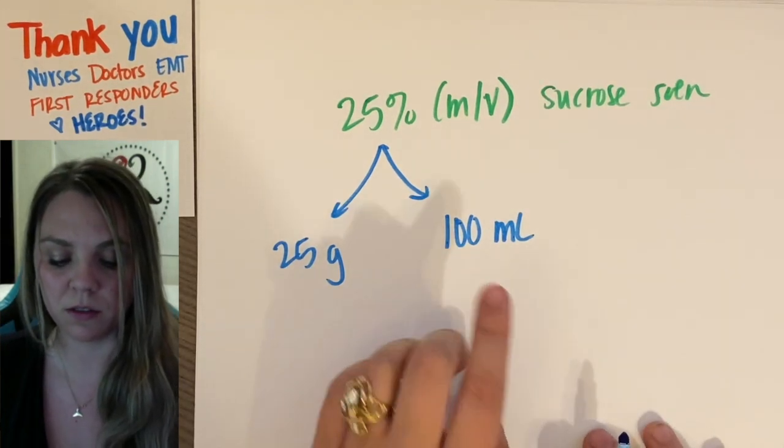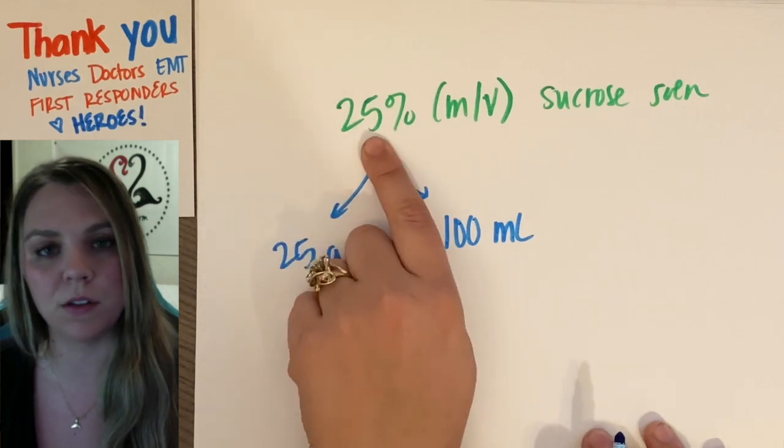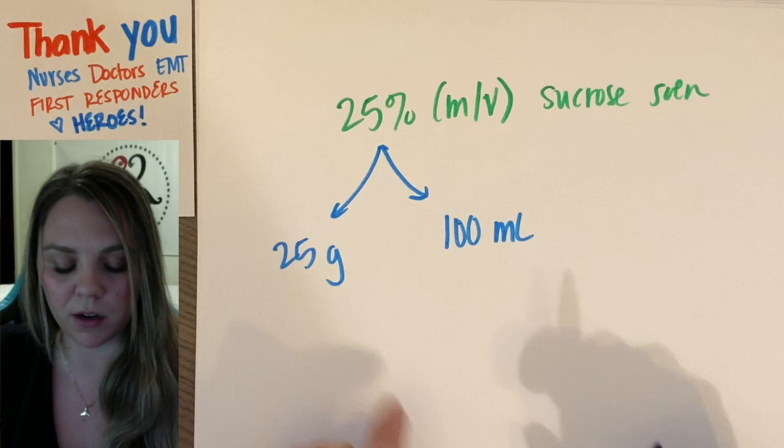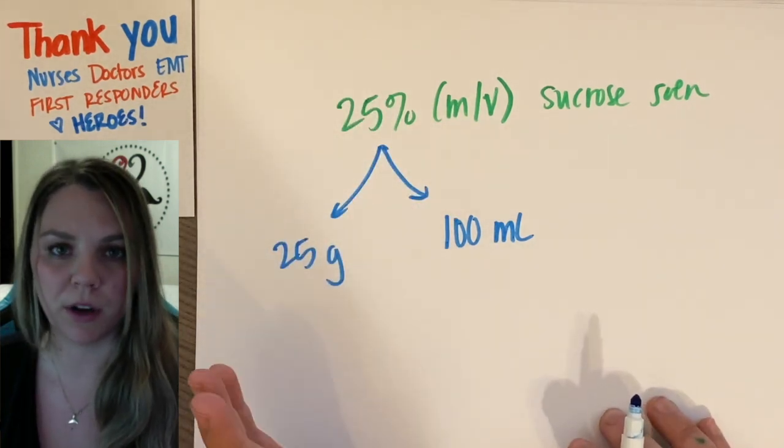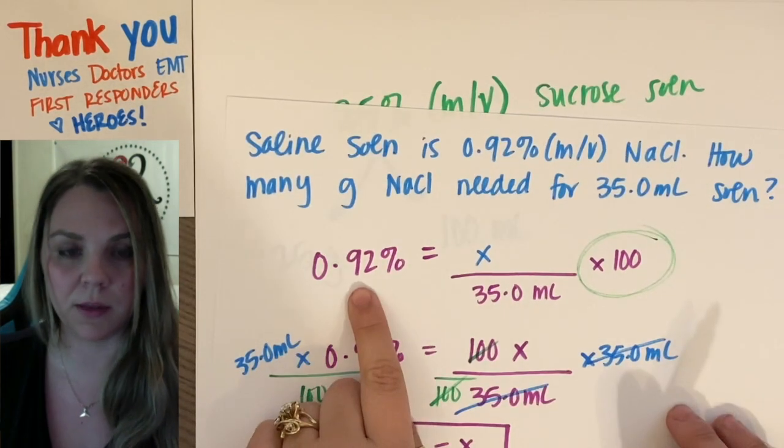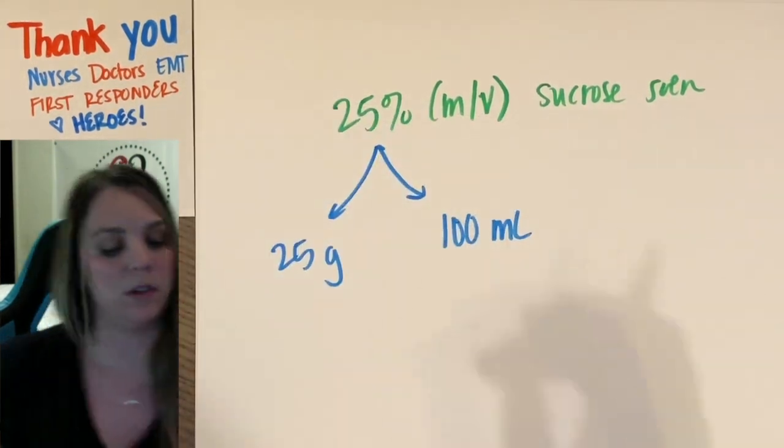You're going to have 25 grams of your solute for every 100 milliliters of solution. So if you're kind of stuck or if you're given this and you need to use it in a conversion or something and you don't know how to break it apart, always just put it out of 100. That's the same.